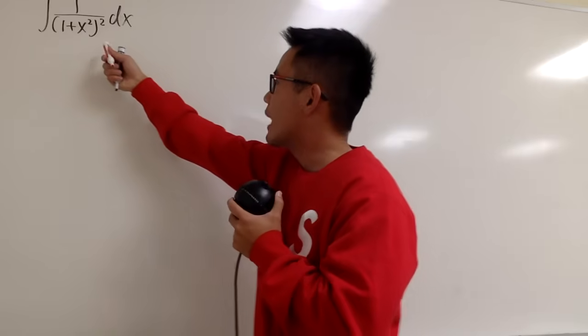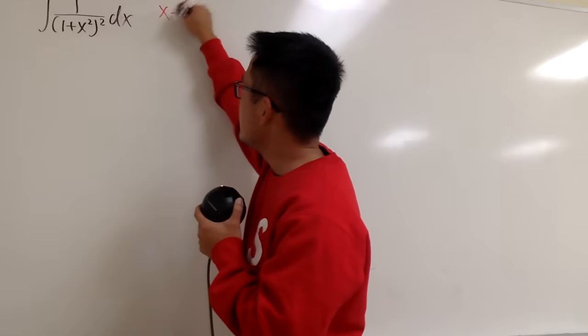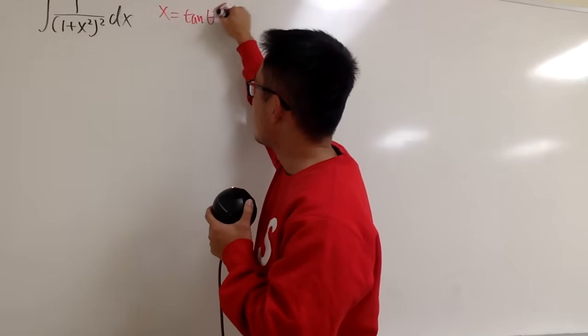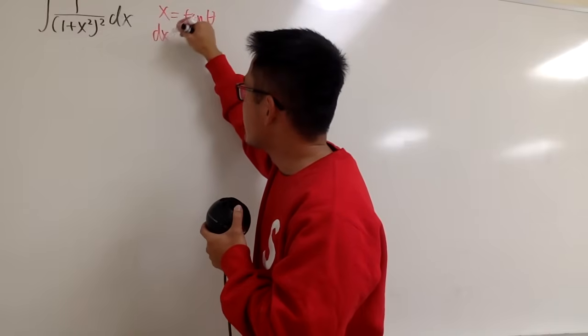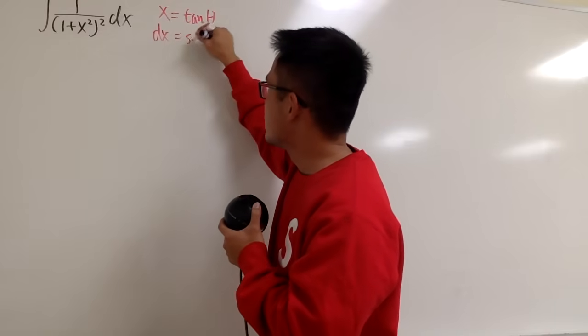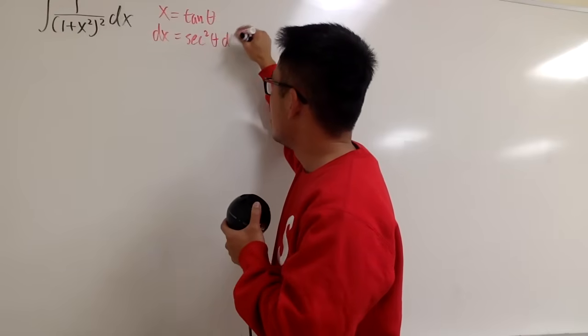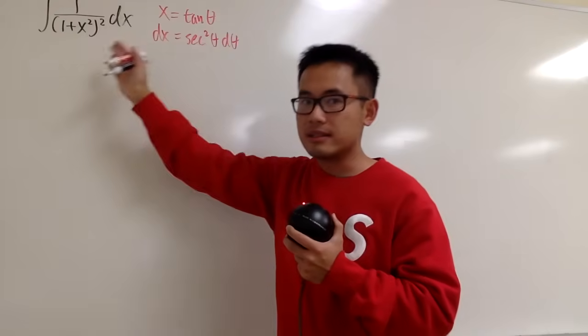So let's get started. I will first write this down that x equal to tangent theta and then we pursue the usual way. Differentiate both sides, so we get dx equals to secant squared theta d theta and now plug in things right here.